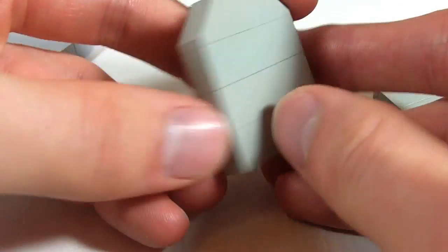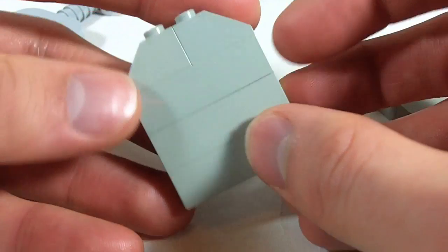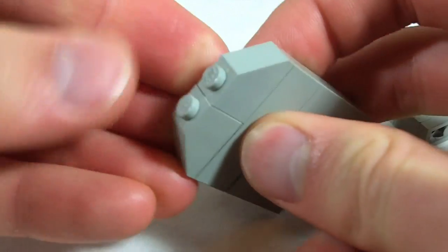So the most basic thing you need for a graveyard are some tombstones. This is a basic design here that uses pretty common parts. It's three 1x4 bricks: one, two, three.